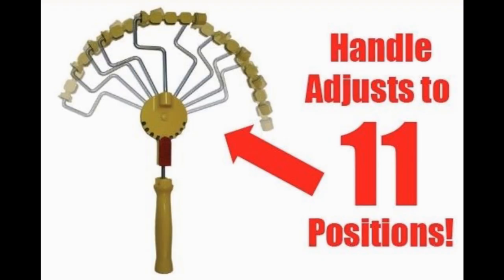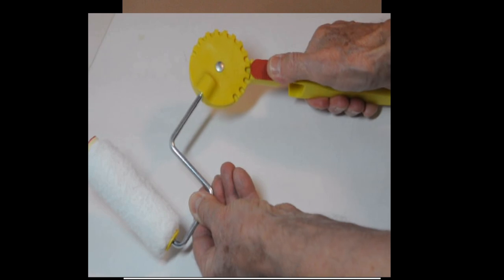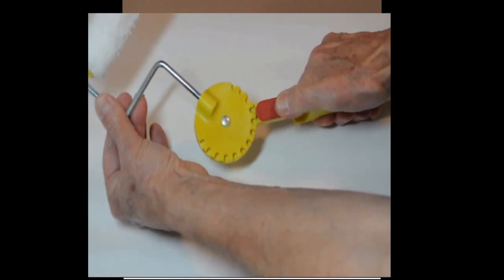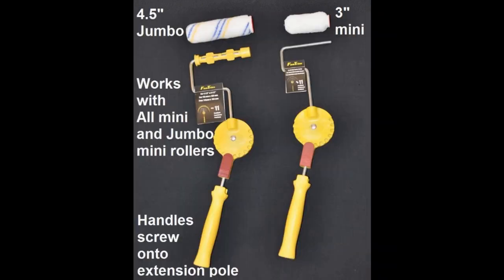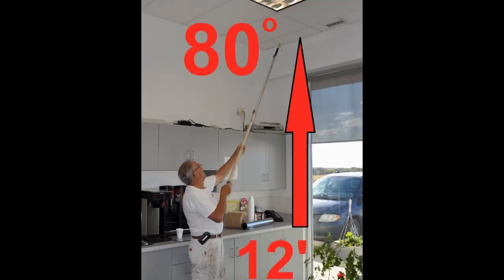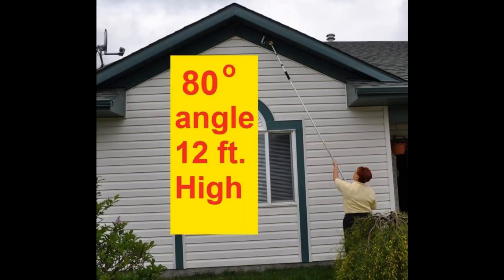In conclusion, our eleven position adjustable handle combined with our three inch mini or our 4.5 inch jumbo mini paint shield rollers will make your paint job easier, quicker, better, and safer.